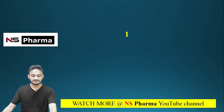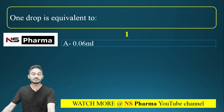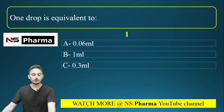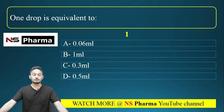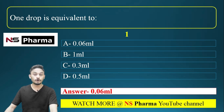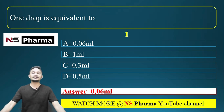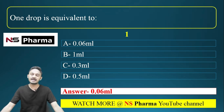Question 1: One drop is equivalent to — options are: (a) 0.06 ml, (b) 1 ml, (c) 0.3 ml, (d) 0.5 ml. This is a simple question. The correct answer is option A: 0.06 ml. One drop is 0.06 ml.